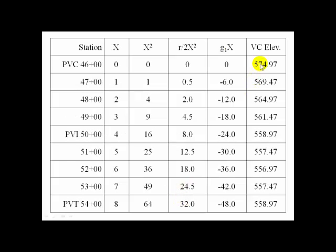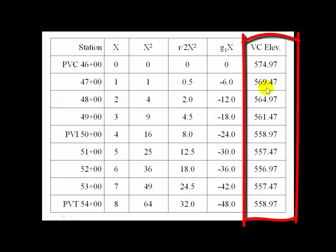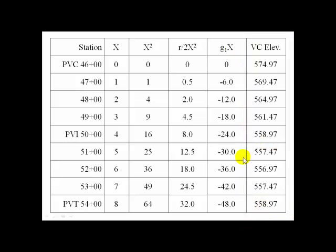And you'll see that our elevations trend downward from the PVC. Here's 74, 69, 64, 61, 58, 57. Looks like we're flattening off. Then 56, and then back up to 57 and 58. The low point for this vertical curve appears to fall somewhere in the vicinity of 52 plus 00.